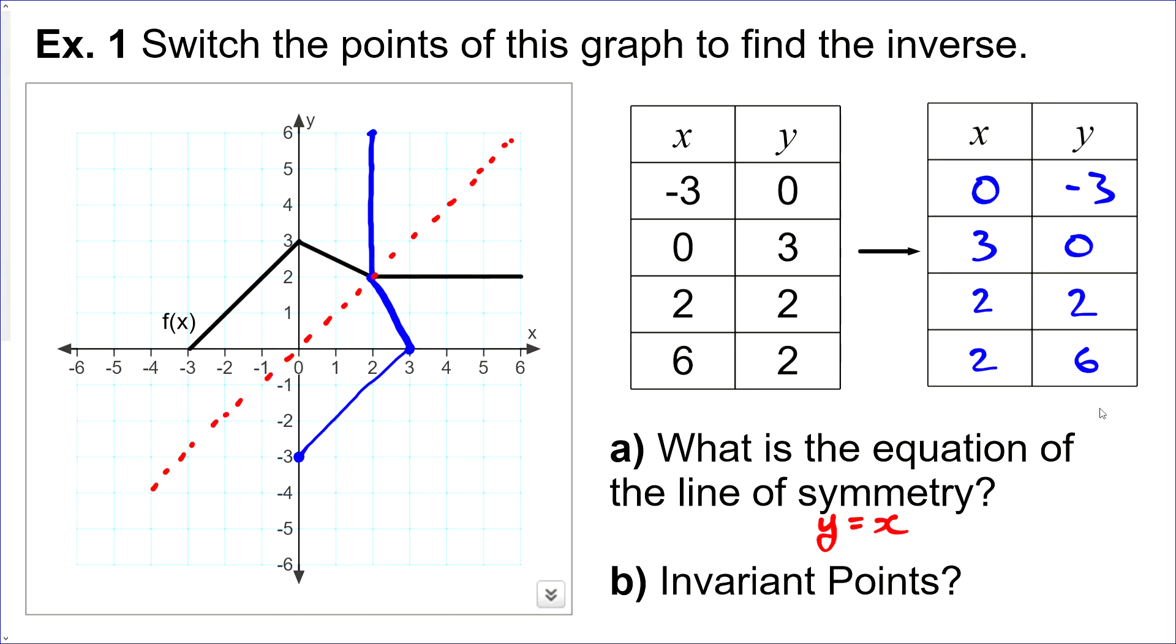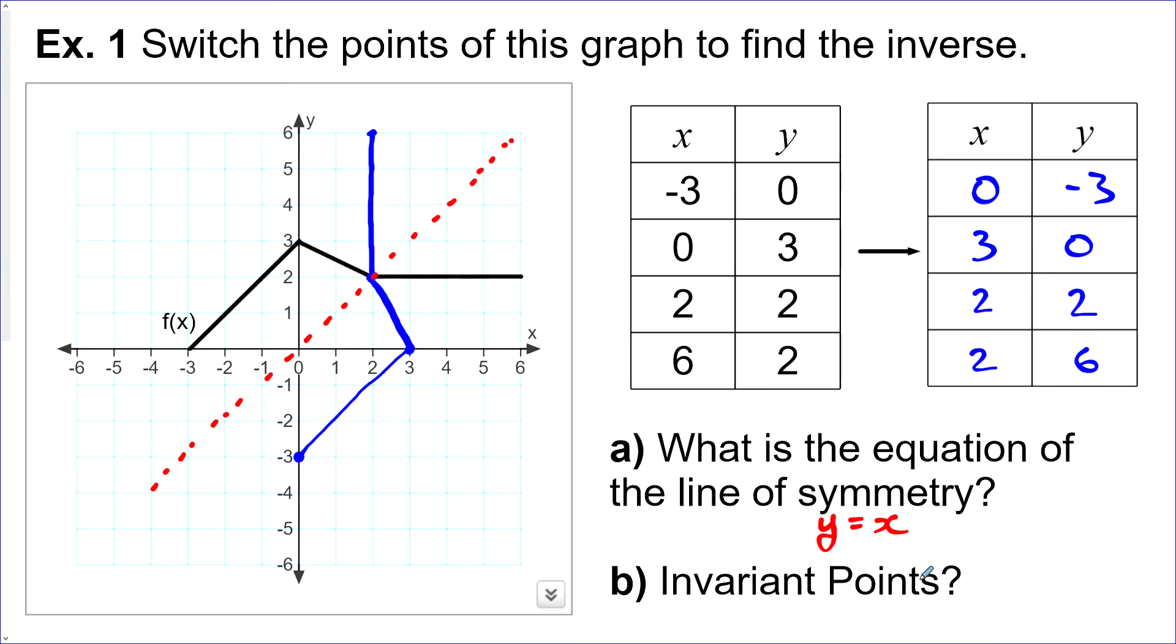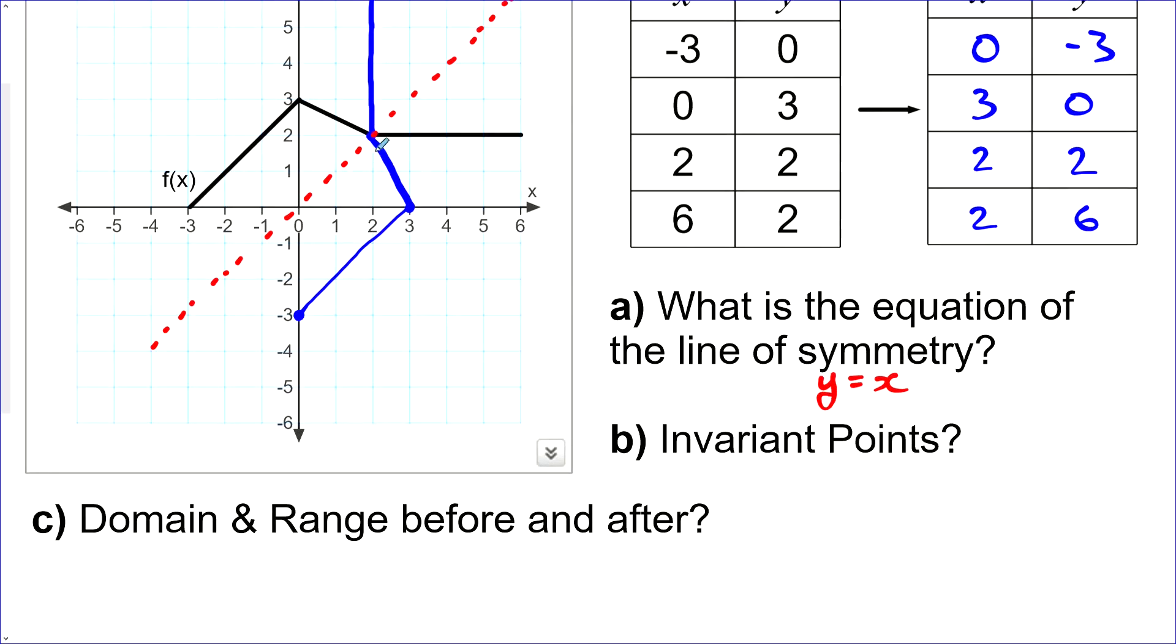How about the invariant points? Well, we mentioned those already. There's just one of them. And again, it's on the line of reflection because that's the only transformation we did is just the inverse. So the invariant point here is 2, 2.